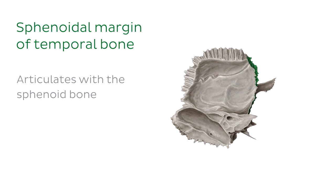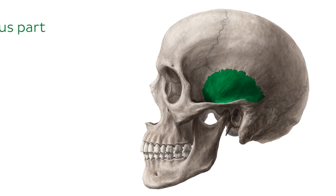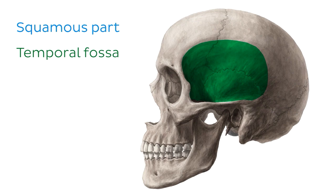Now let's move on to look at the different parts of the temporal bone. Going back to our lateral view, let's start off by looking at the squamous part. The squamous part is the most anterosuperior part of the temporal bone. Its external surface is smooth and convex. It forms part of the temporal fossa, which is a shallow depression on the lateral surface of the skull. The temporalis muscle, one of the muscles of mastication, attaches here.